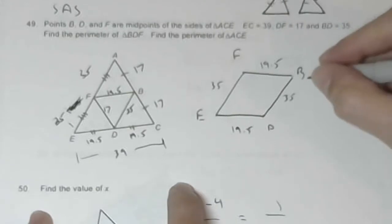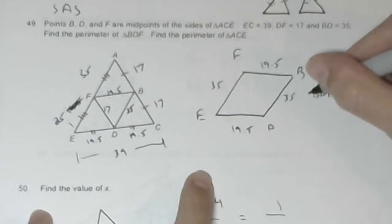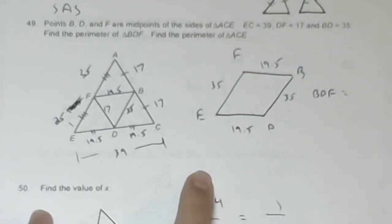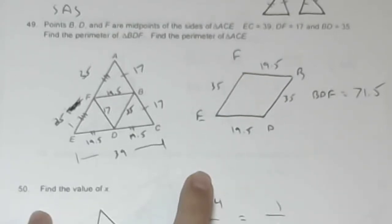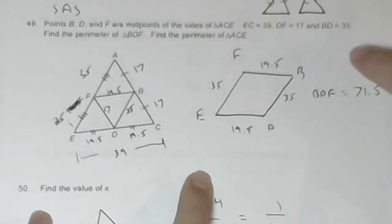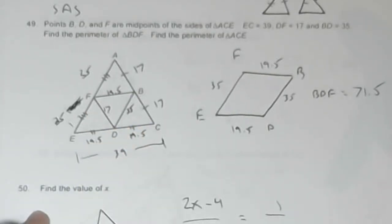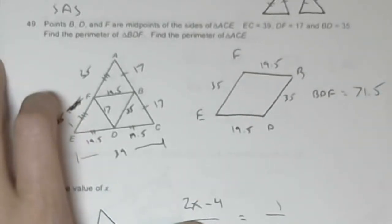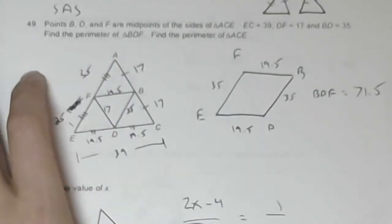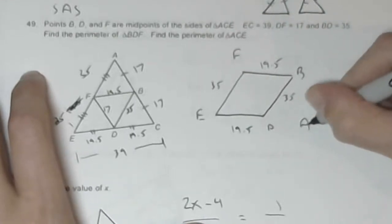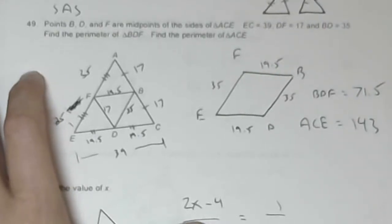So the perimeter of triangle BDF is 35 plus 19.5 plus 17, which is 71.5. I'm going to just check that it passes triangle inequality, which says that the third side must be less than the sum of any two sides and greater than the difference. So 35 is less than the sum of 17 and 19.5. And then the large triangle, this will be 70 plus 34, which is AC, plus 39. So for triangle ACE, the perimeter is 143.